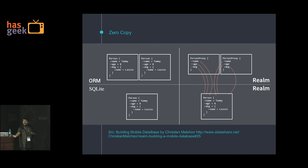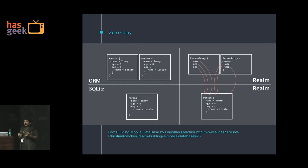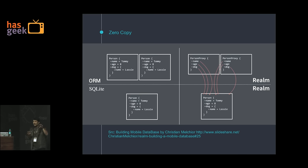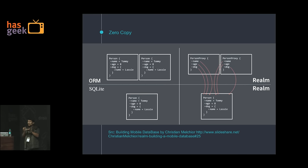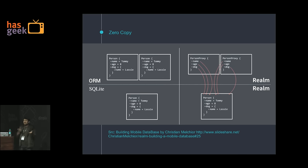When you do a get on a Realm object, it gives you a pointer to that memory location — it is not actually copying the data. When you are using an ORM like Sugar, it reads all the data from the database and creates an object in memory — you have a replica of the data. However, when you do the same thing in Realm, it just has a reference, a proxy object pointing to that data. The read in Realm is very fast — less than a millisecond for thousands of objects — because it is just pointing you to that location.